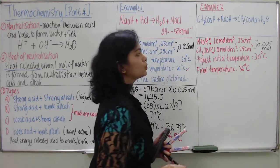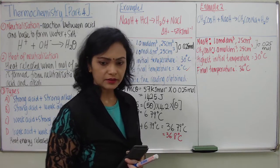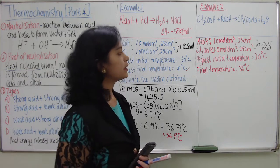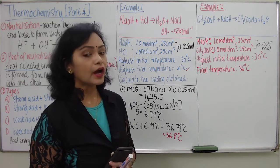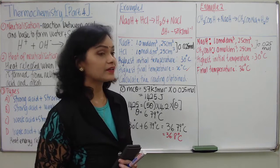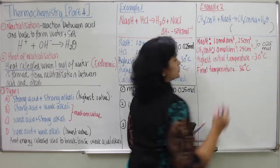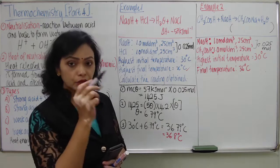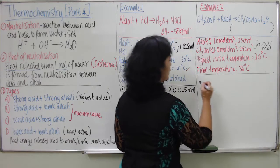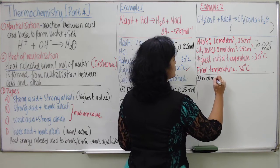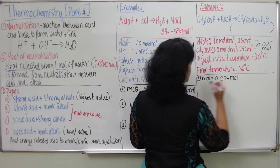The highest initial temperature is 30°C and the final temperature is 36°C. What you are exactly supposed to find is the heat of neutralization for this reaction. Heat of neutralization — first start with moles. The moles used for both of them is 0.025 mol.